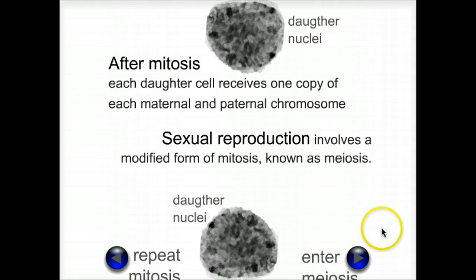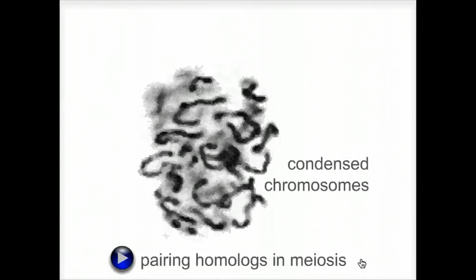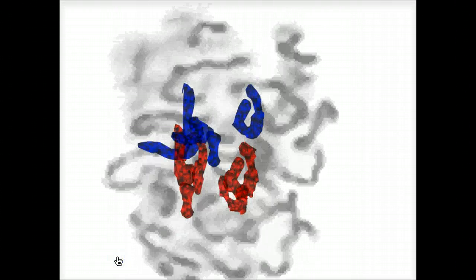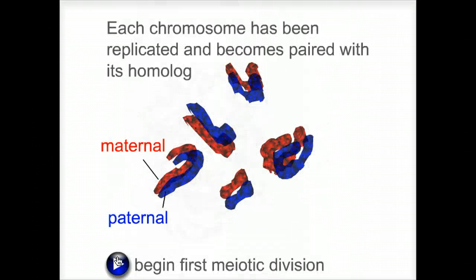In meiosis, the chromosomes replicate and the cell enters the meiotic process. The nucleus dissolves, the chromosomes condense, but now something different happens. Each chromosome has become paired with its homologue — the chromosome from the mother pairs with the chromosome from the father. This does not occur in mitosis.